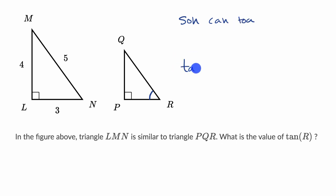So tangent of R is going to be equal to the length of the opposite side over the adjacent side. And we could also write this as QP over PR.